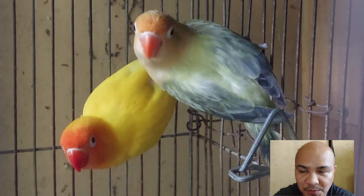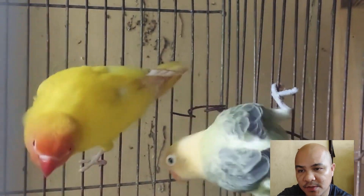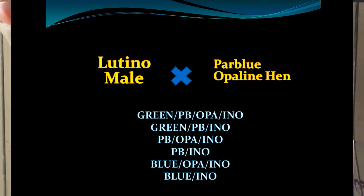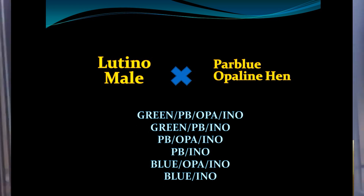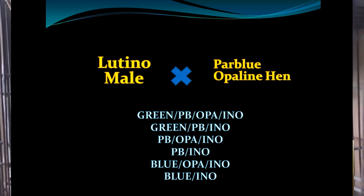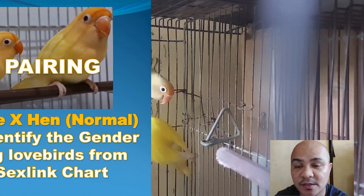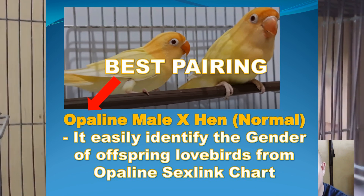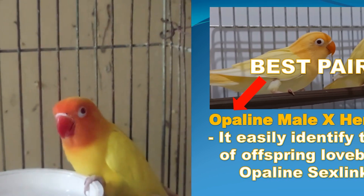If we pair lutino and par blue opaline offspring together, the possible results are: green split par blue, split opaline, split ino for males; and for females: green split par blue split ino, par blue split opaline split ino, blue split ino, and blue split ino. It's much better if you have the opaline as a male, because by the opaline chart you can immediately identify the gender of offspring.